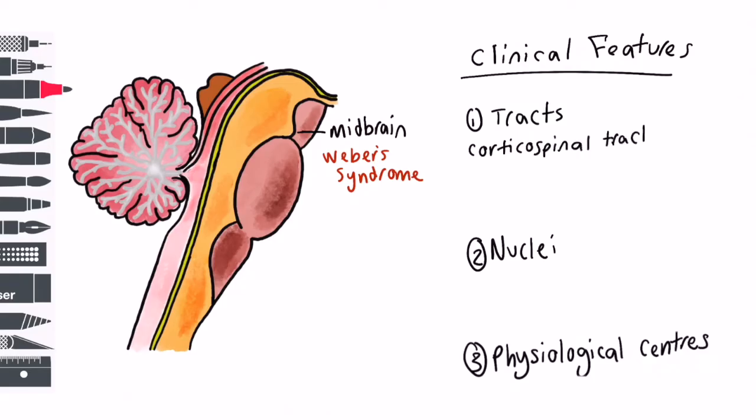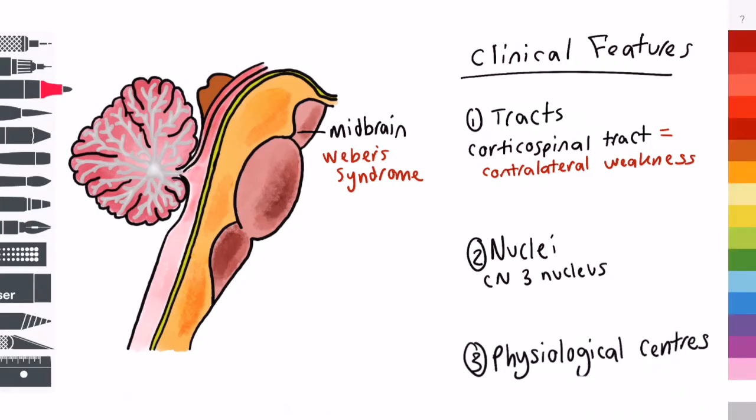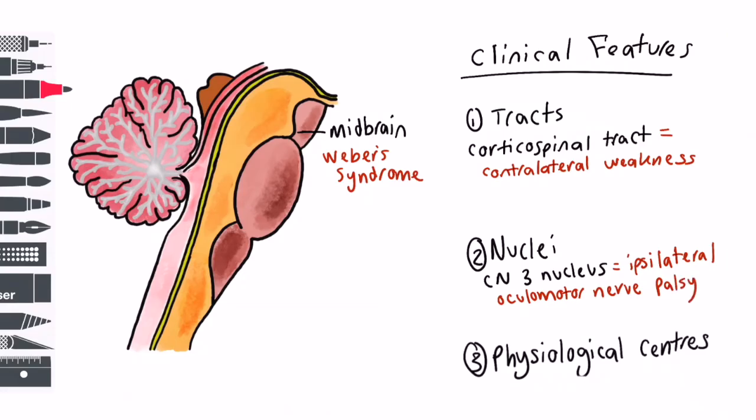The main tract affected is the corticospinal tract which results in a contralateral weakness. The main nucleus affected is the cranial nerve 3 nucleus which results in an ipsilateral oculomotor nerve palsy. Physiological centres are often not affected.